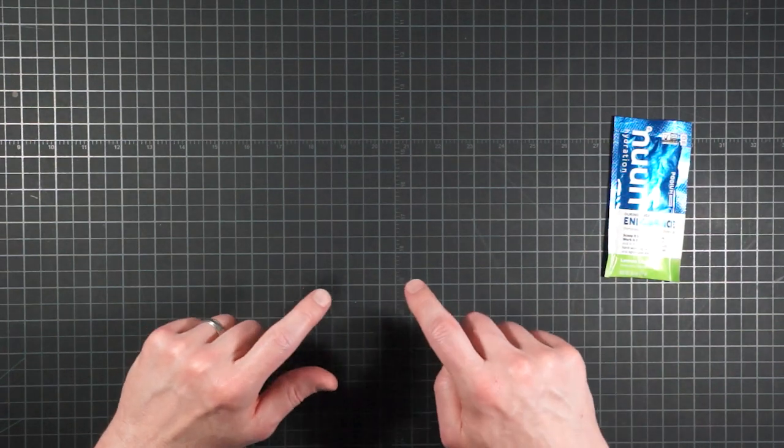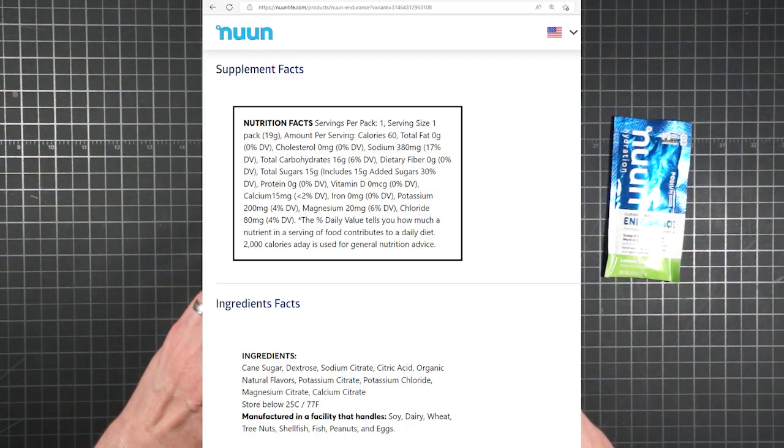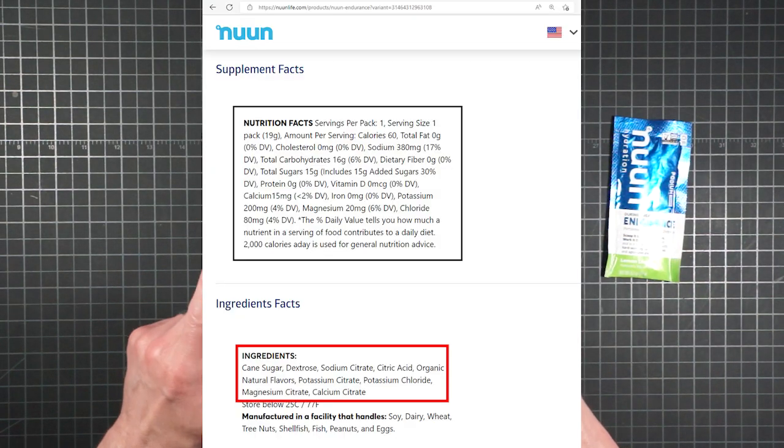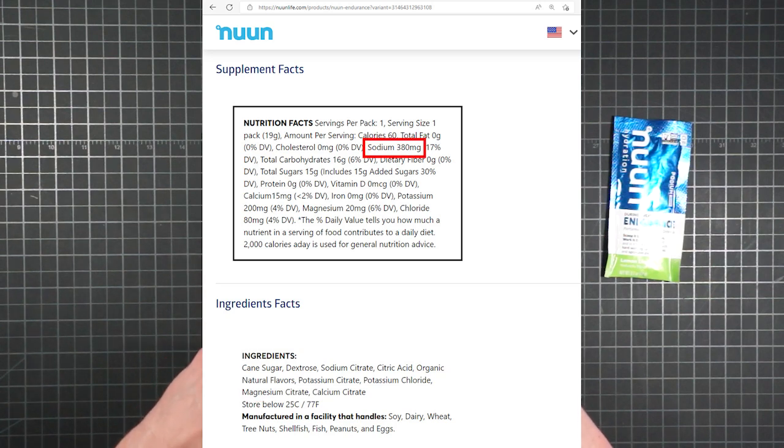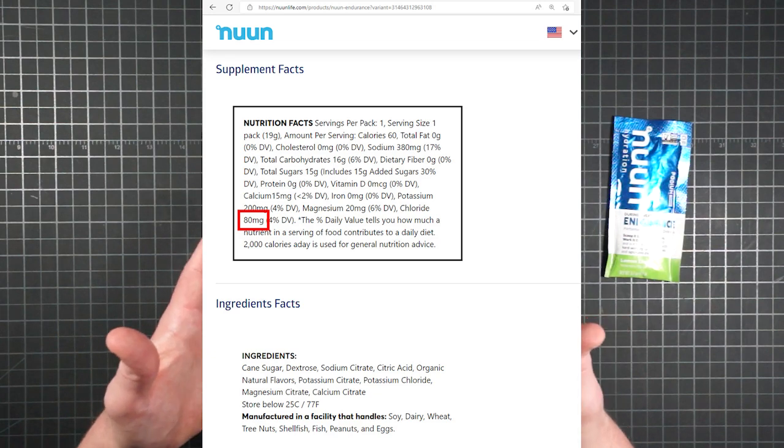Newton makes these endurance packets, and their ingredients show that all of the sodium, calcium, and magnesium included comes from citrates. The potassium is provided by a mix of citrate and chloride. So as a result, while there are 380 milligrams of sodium and 200 milligrams of potassium, there are only 80 milligrams of chloride. That's significantly out of proportion to your sweat.